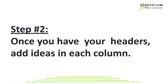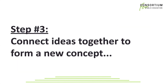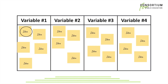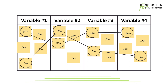Step 2: once you have your headers, add ideas to each column. Try to fill in each column with as many ideas as possible. Step 3: connect ideas together to form a new concept. Step 4: look for other combinations to create additional concepts. You can connect to more than one idea in a given column, but make sure to make a connection between each one of the columns to form a new concept.